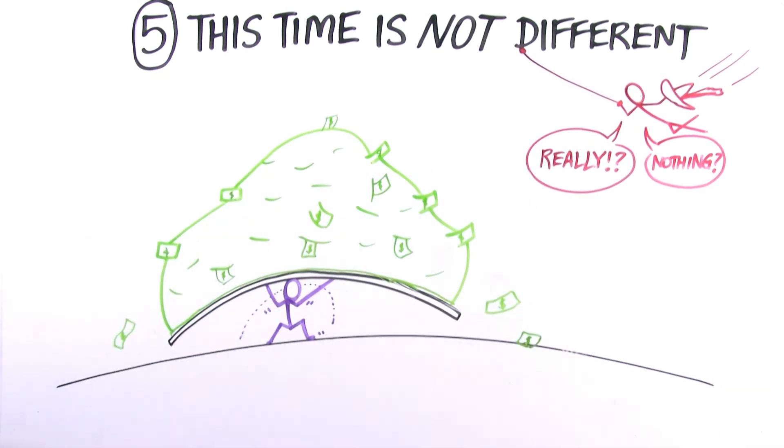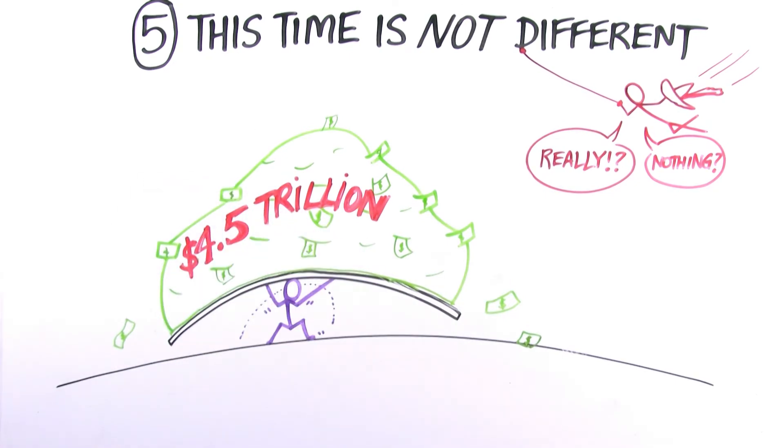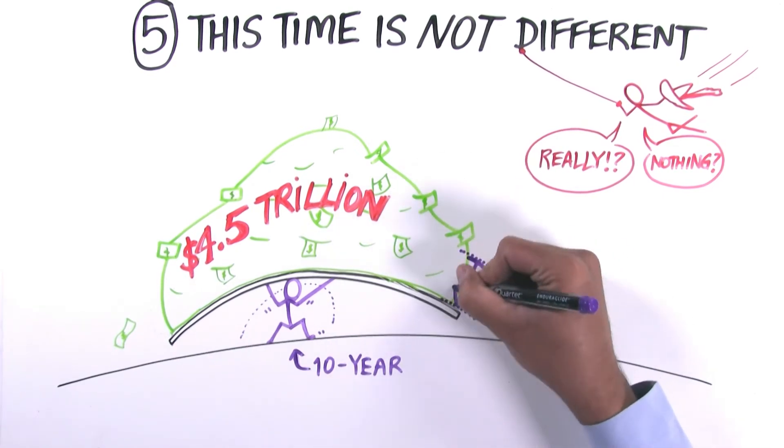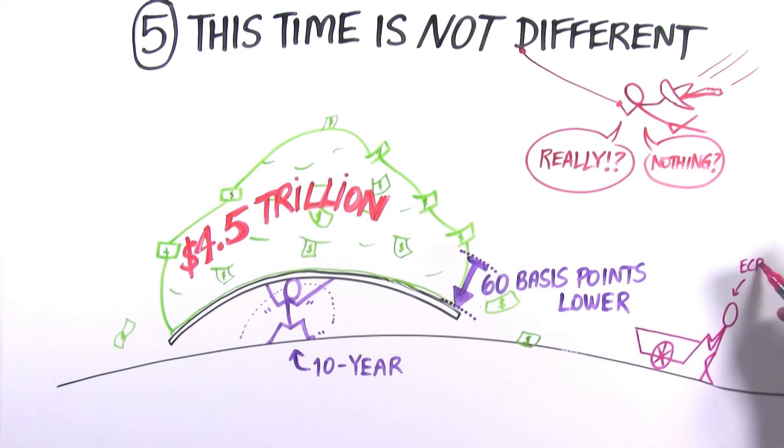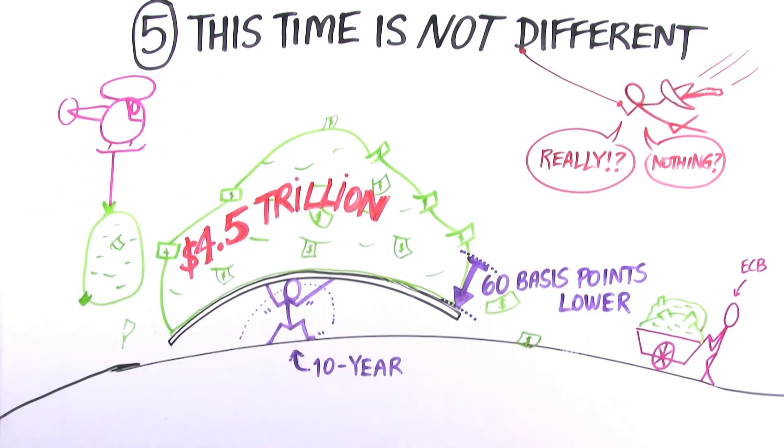Not the $4.5 trillion Fed balance sheet that did not exist in 2006? Fed research suggests that 10-year Treasury yields are 60 basis points lower than they otherwise would be because of the Fed's balance sheet. That could be keeping the curve flatter than it otherwise would be, and that could be muting some of the signal that we otherwise would receive from the yield curve.